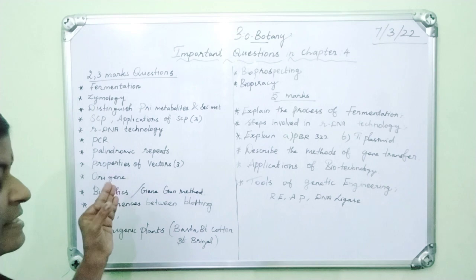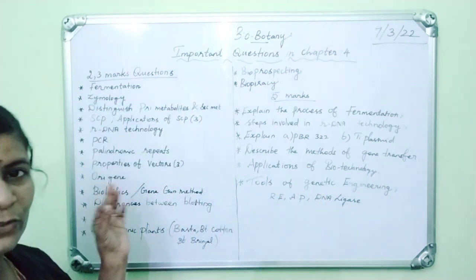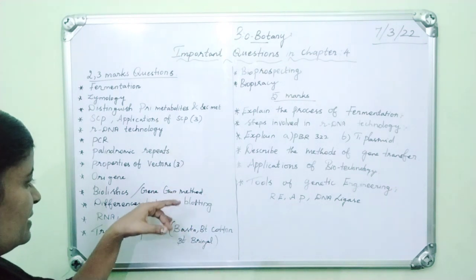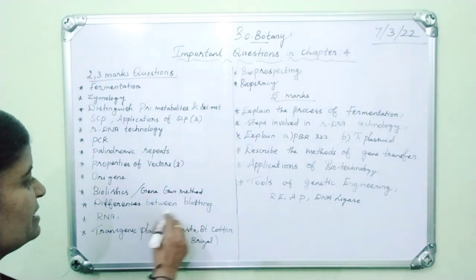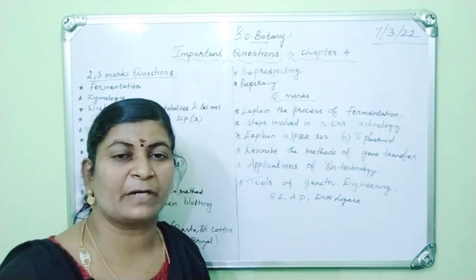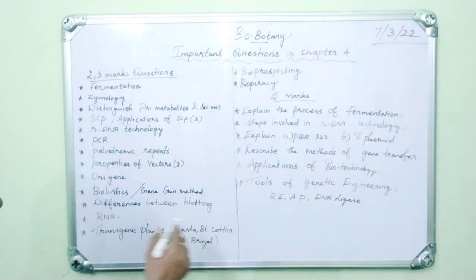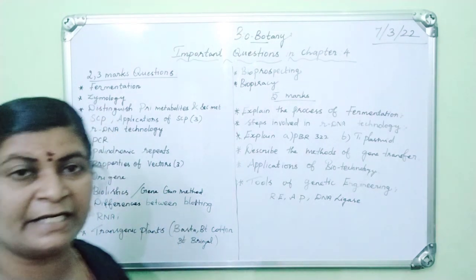ReGene is very important. Then biolistics or gene gun method. These may be asked as three mark questions. Biolistics, gene gun method. Then differences between blotting techniques, that is the comparison between southern blotting, northern blotting, western blotting.